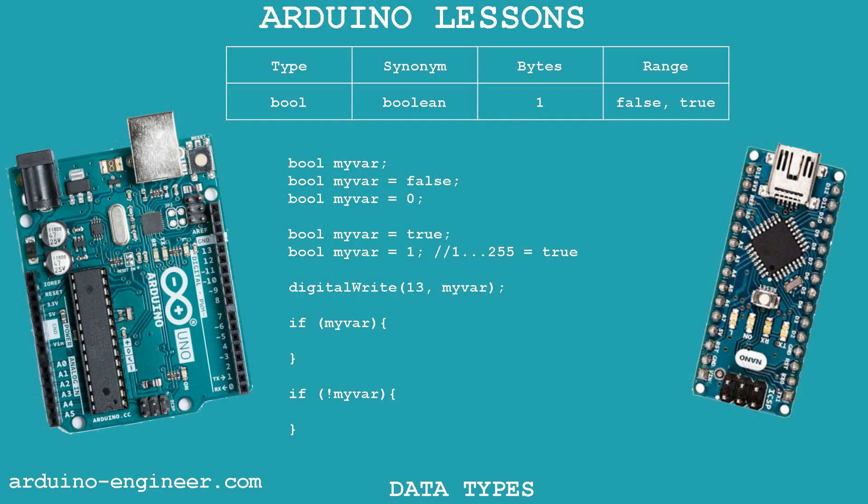Here are examples of possible options for declaring such a variable and assigning values to it. All assigned numbers greater than zero will set the bool variable to true. A boolean variable can be inserted into the digitalWrite function to set the state of the controller's digital output. It is also convenient to use a boolean variable in if statements – the condition will work if the variable is in the true state, and vice versa in the second.